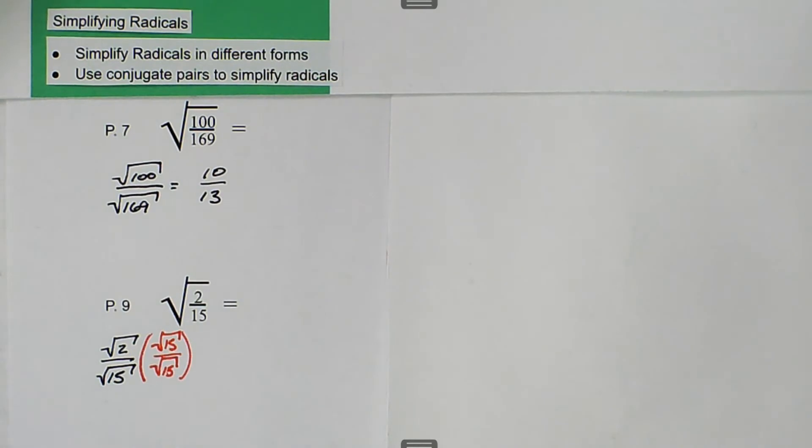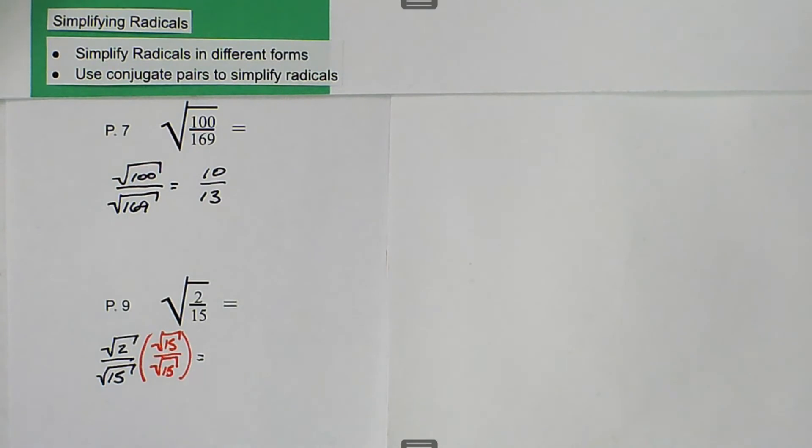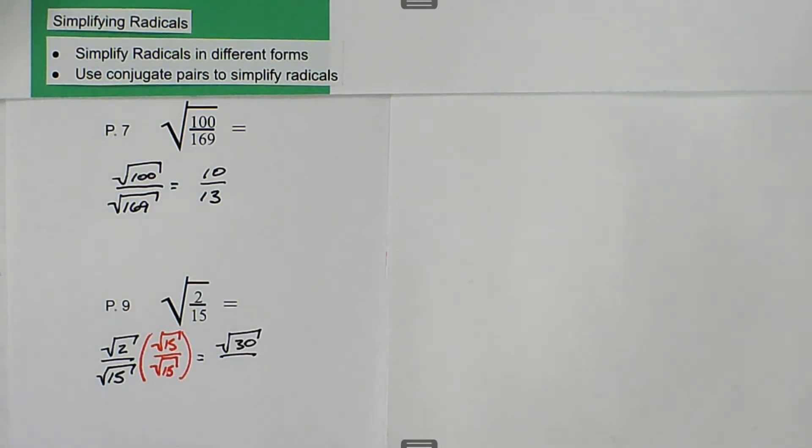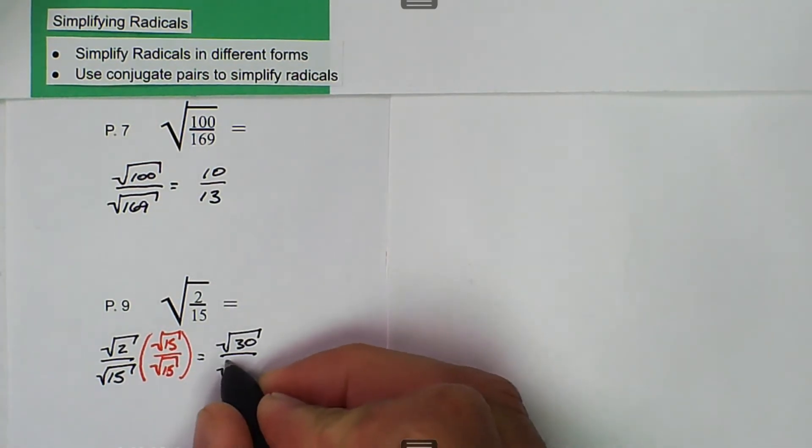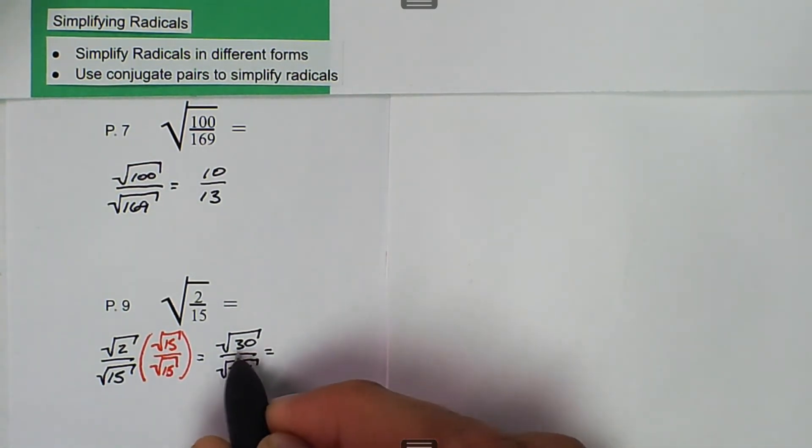What we get is 2 times 15, which is the square root of 30, divided by the square root of 225, which is equal to—we actually can't reduce the square root of 30. That's as simple as it gets.